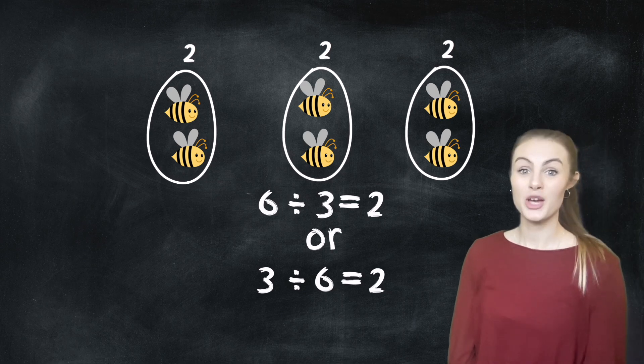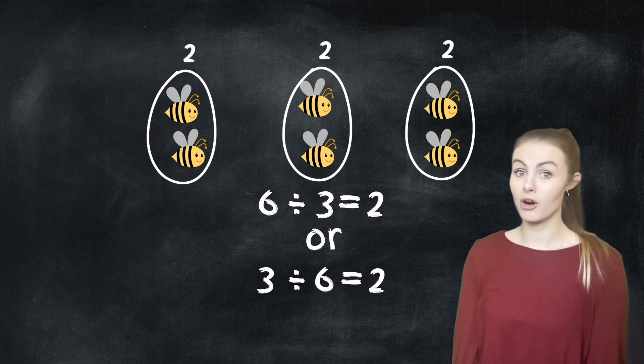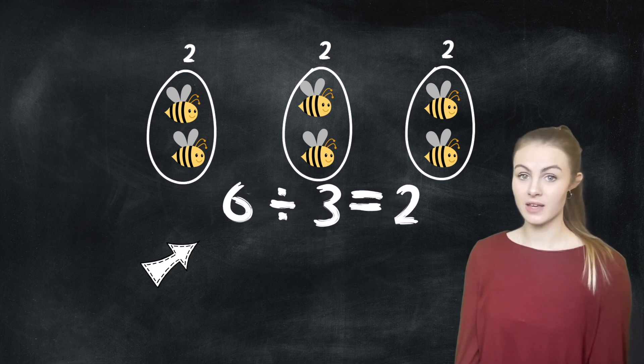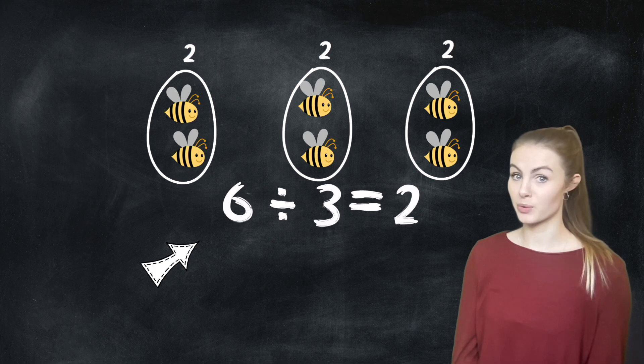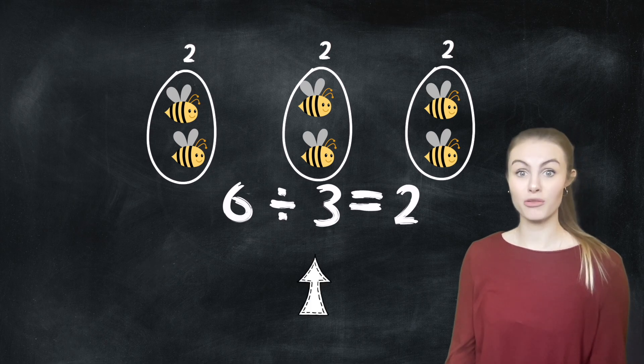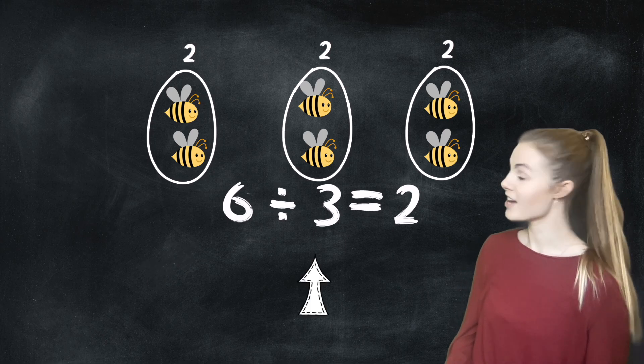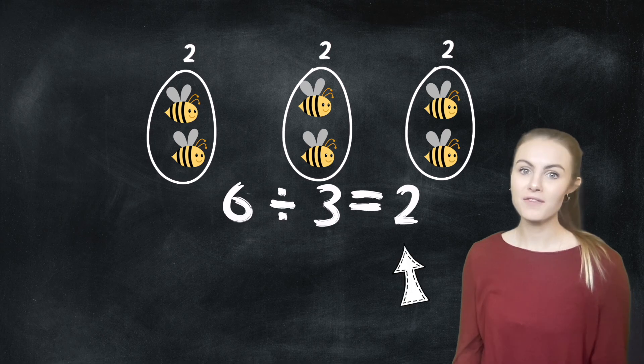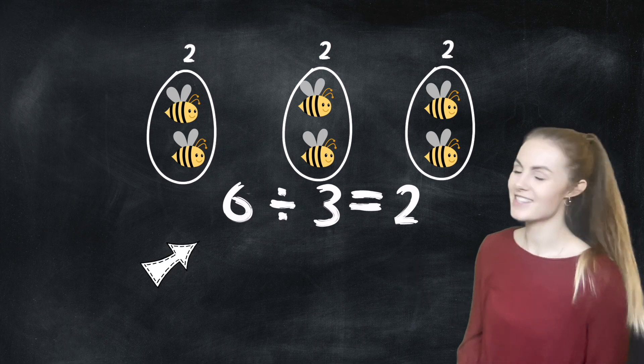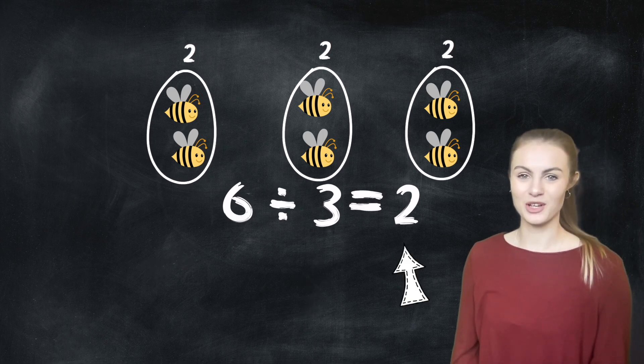Welcome back. So when we write out our division number sentence, we always start with our total or our whole number. So in this case, it was 6 because we started with 6 bees. And then we say how many we shared them out between. So that was between 3 groups. So we put 6 divided by 3. And then after the equal sign, we say how many there were in each group. So as there were 2 in each group, we put in the 2. 6 divided by 3 equals 2.